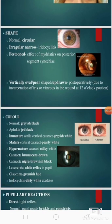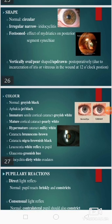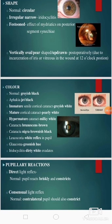We should see the shape of the pupil. Normally it is circular; it is irregular and narrow in iridocyclitis and festooned — the effect of mydriatics on posterior synechiae. It may be vertically oval, pear-shaped, or updrawn posteriorly due to incarceration of iris or vitreous in the wound at 12 o'clock position.